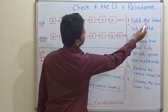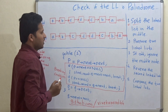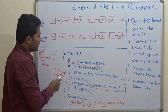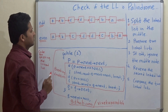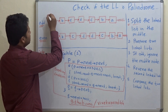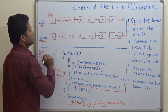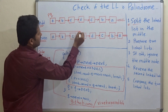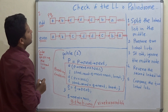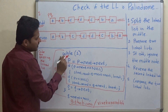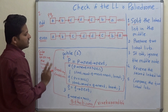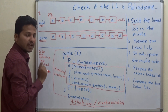The first step is to split the linked list in the middle. This is the code for splitting the linked list. We are going to execute this code on the first linked list. P and Q are the two pointers which will initially point to the head of the linked list. P will move forward by two positions at each iteration.